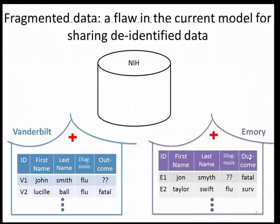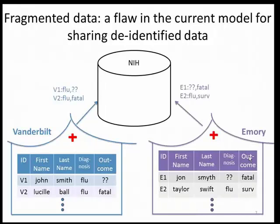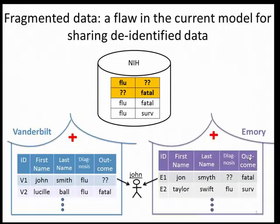Next we'll look at a related flaw: fragmented data. Imagine that John goes to Vanderbilt and is diagnosed with flu, but they're not sure about his outcome. John subsequently goes to Emory and dies, but they're not sure what he had. This is not an uncommon scenario — patients often go to multiple providers and each provider has a subset of the patient's medical information. When shared, the identifiers are removed, the clinically relevant information is shared, and when aggregated at the NIH the records aren't put together. When researchers ask how many people had flu and died, the answer here is one — an underestimate of the true answer.